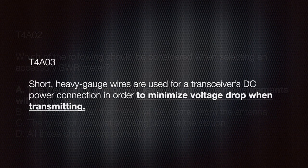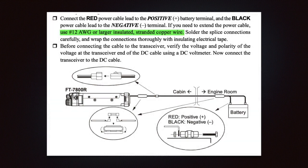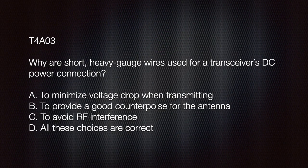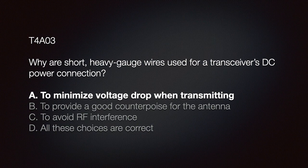We should know that short, heavy-gauge wires are used for a transceiver's DC power connection in order to minimize voltage drop when transmitting. Looking at the FT-7900 user manual, it states that if you extend the power cable you should use 12-gauge or larger insulated standard copper wire, keeping it as short as possible to lower current loss and prevent overheating. The question is: why are short, heavy-gauge wires used for transceiver DC power connections? A) To minimize voltage drop when transmitting, B) to provide a good counterpoise for the antenna, C) to avoid RF interference, D) all these choices are correct. The answer is A — to minimize voltage drop when transmitting.